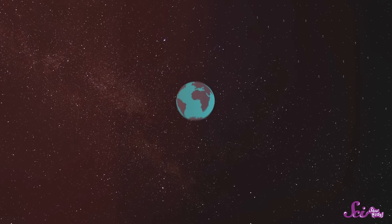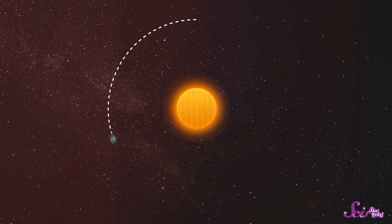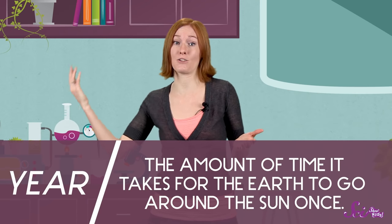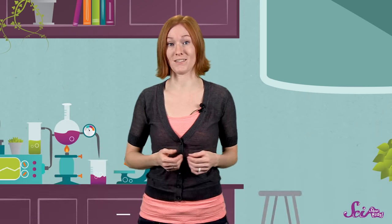And our tilted planet travels around the Sun, completing one full trip all the way around every year. I mean, that's what a year is — the time it takes for the Earth to go around the Sun once.